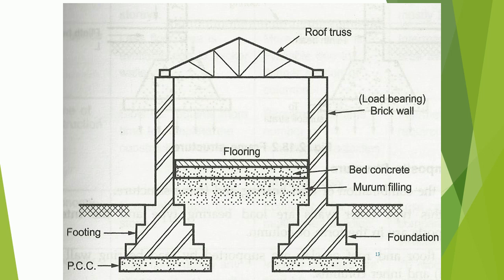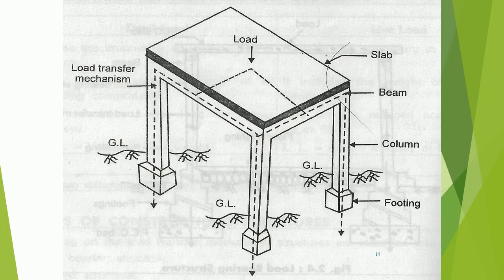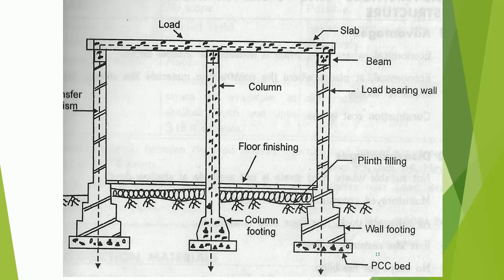There are three types of structures: 1. Load bearing structure, 2. Framed structure, 3. Composite structure. Photographs of each type of structure are shown, along with the difference between load bearing structure and framed structure.